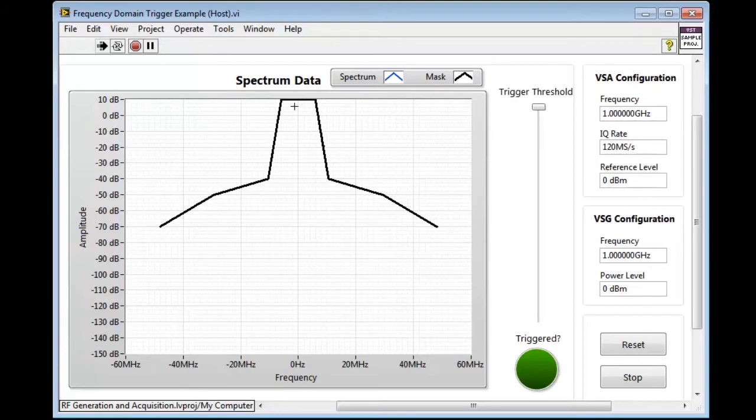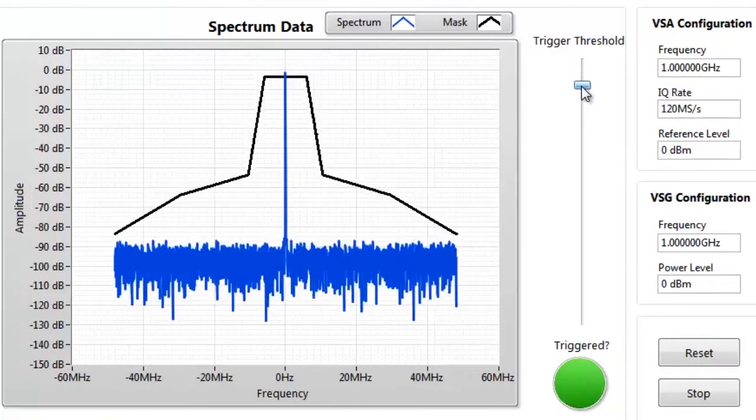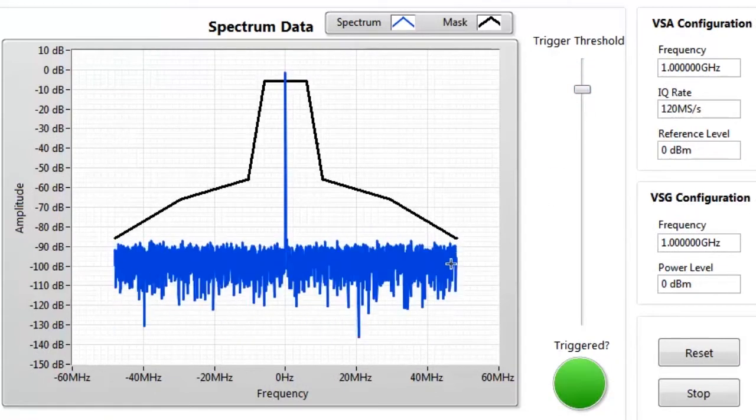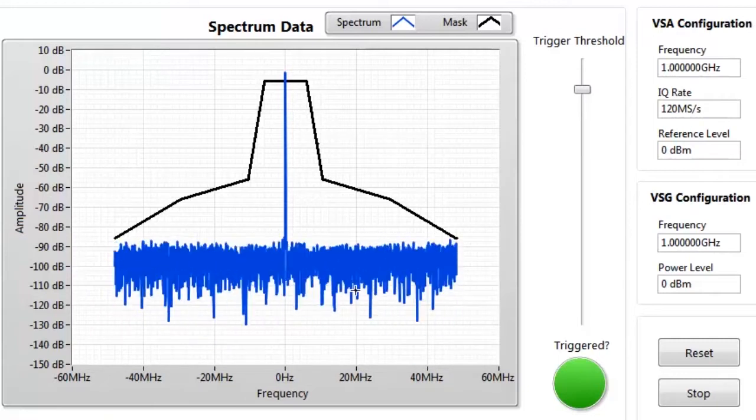Now let's take a look at how we can customize the FPGA to give it a frequency domain trigger. Here in this LabVIEW front panel, I have my spectral mask here, which acts as the trigger level for my frequency domain trigger. As I drag the trigger threshold down, we can see that it triggers the measurement at about 0 dB.